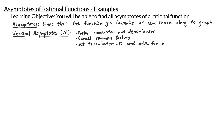Let's talk about vertical asymptotes — I'll usually abbreviate them with VA. To find vertical asymptotes, we factor the numerator and denominator of our rational function, we cancel out the common factors, and then we set the denominator equal to zero and solve for x.